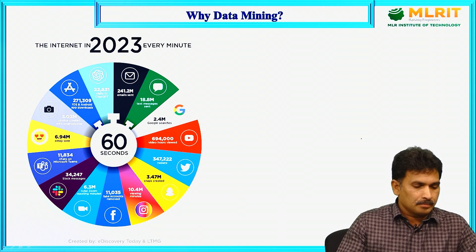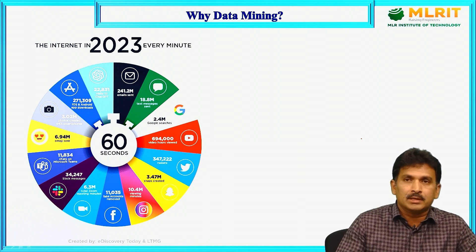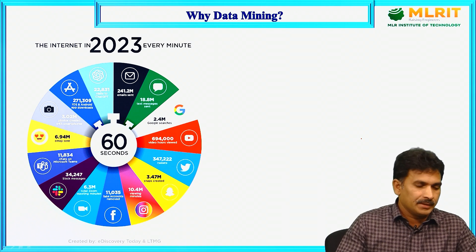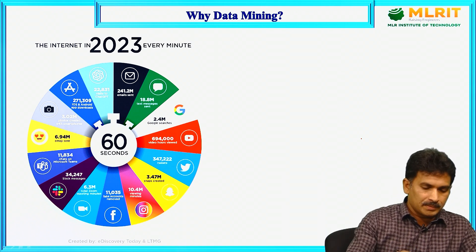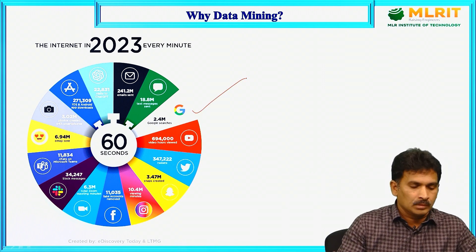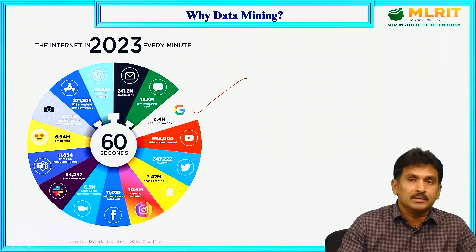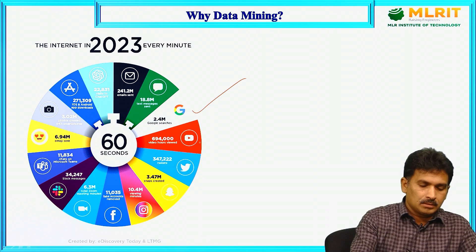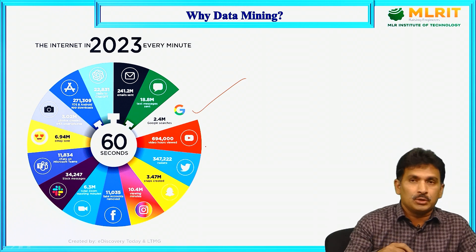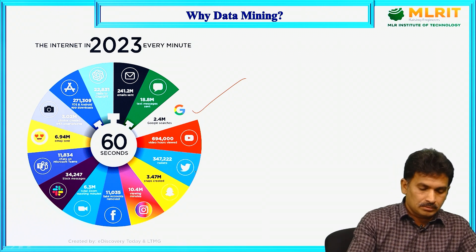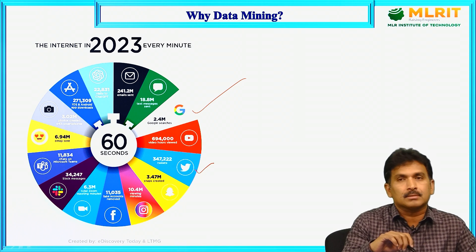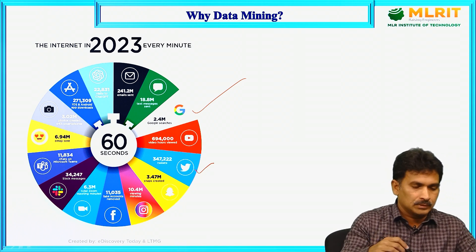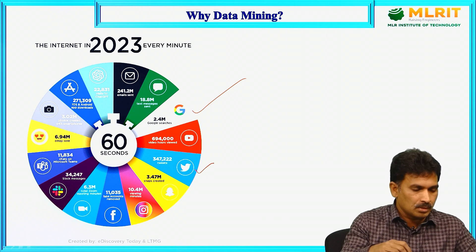If you look at this pie chart, you can understand what is happening on the internet in just one minute — not one hour, not one day, but in a minute. There are approximately 2.4 million Google searches per minute, 690,000 hours of video uploaded to YouTube per minute, and 347,222 other activities per minute. These are all causing the generation of huge abundant volumes of data.